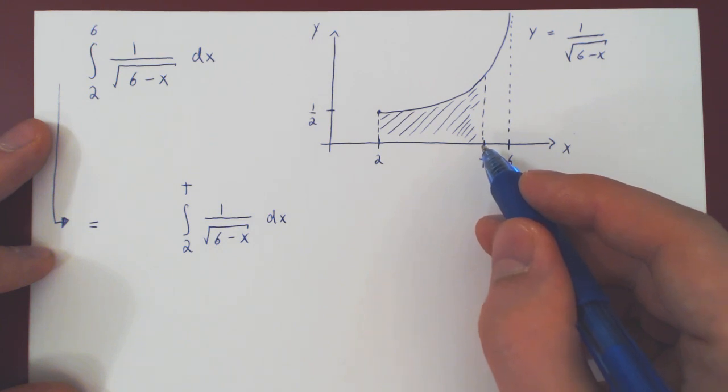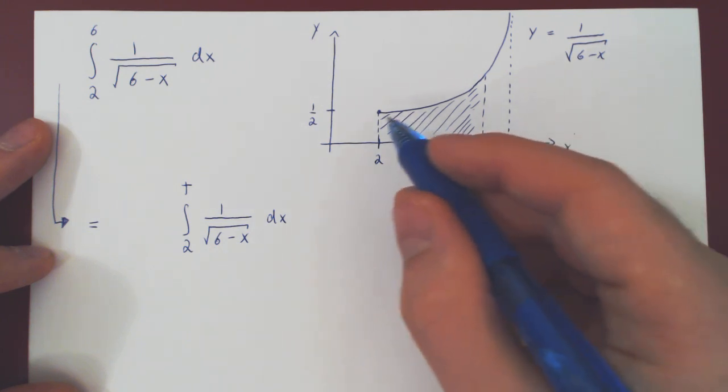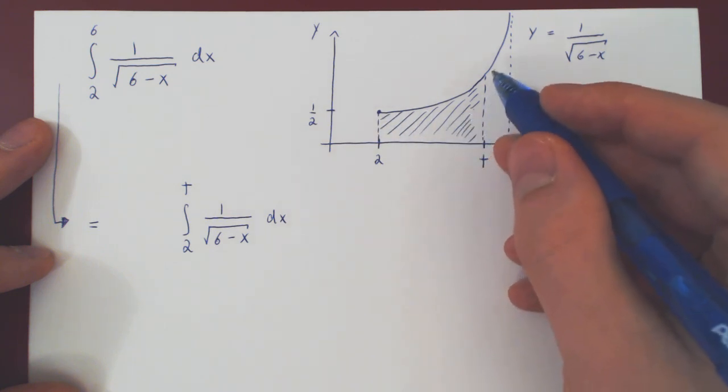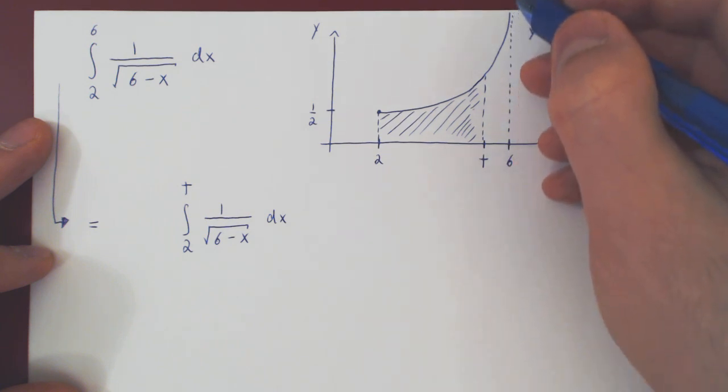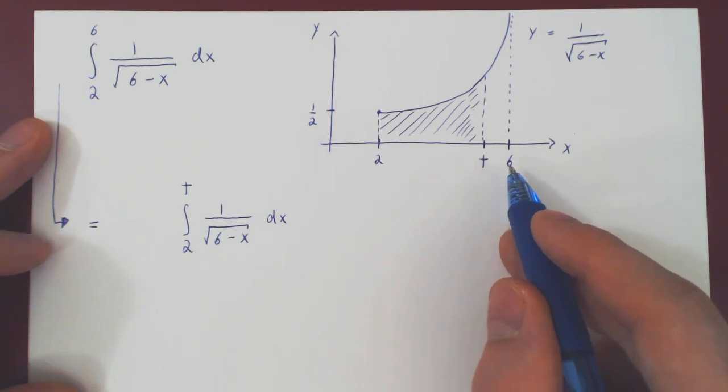Well, if we slowly let t approach 6 from the left, then our area will approach, if it exists, the area of this infinitely now high region. So we simply have to let t now approach 6, but again be careful,